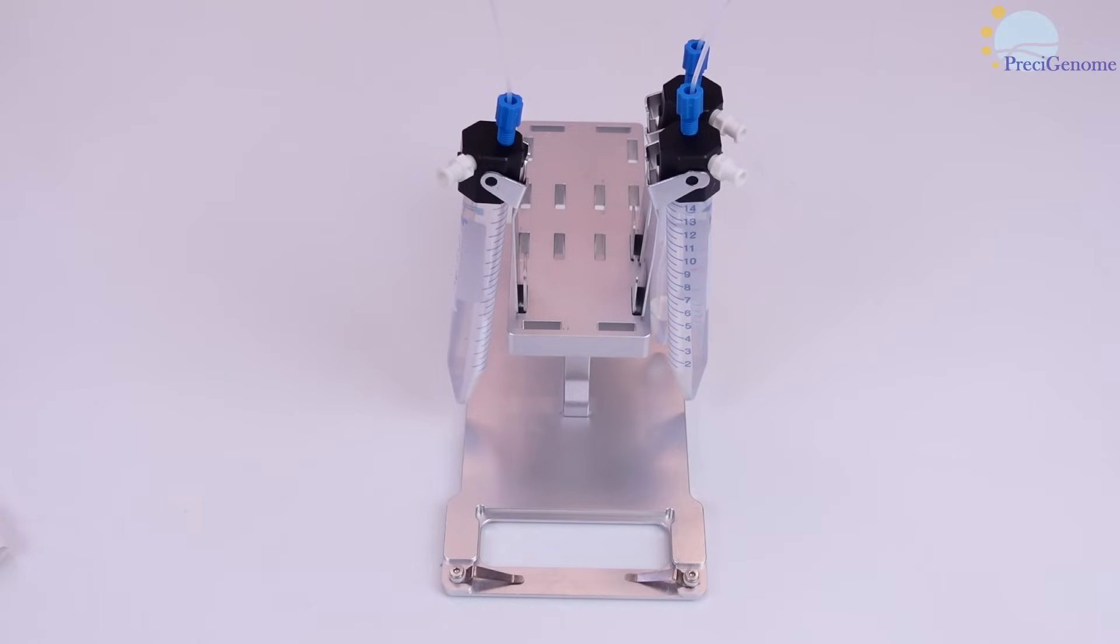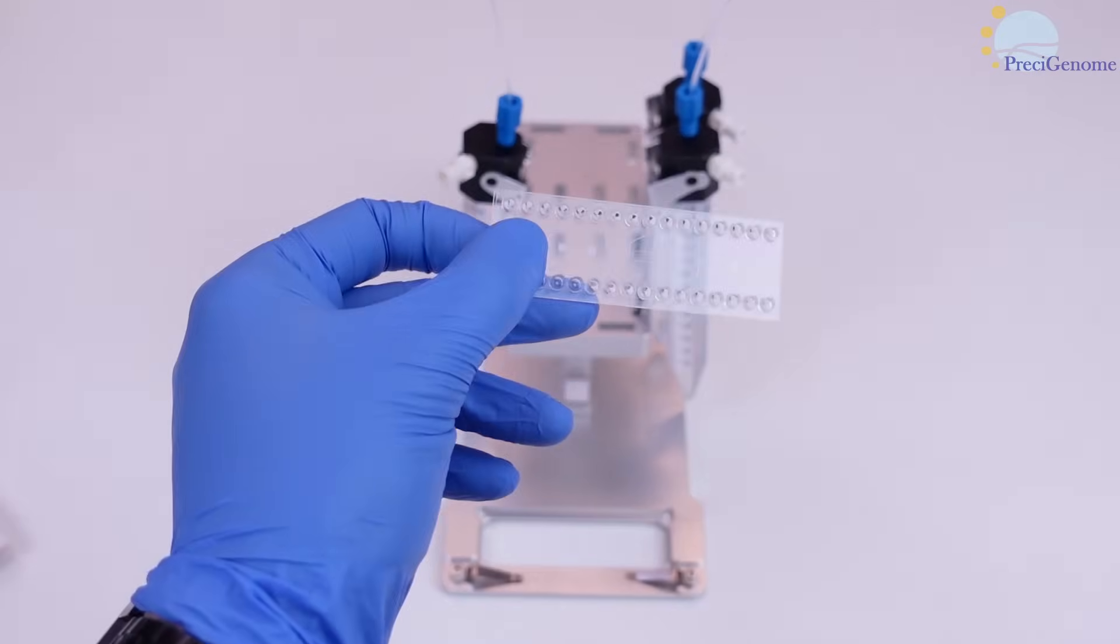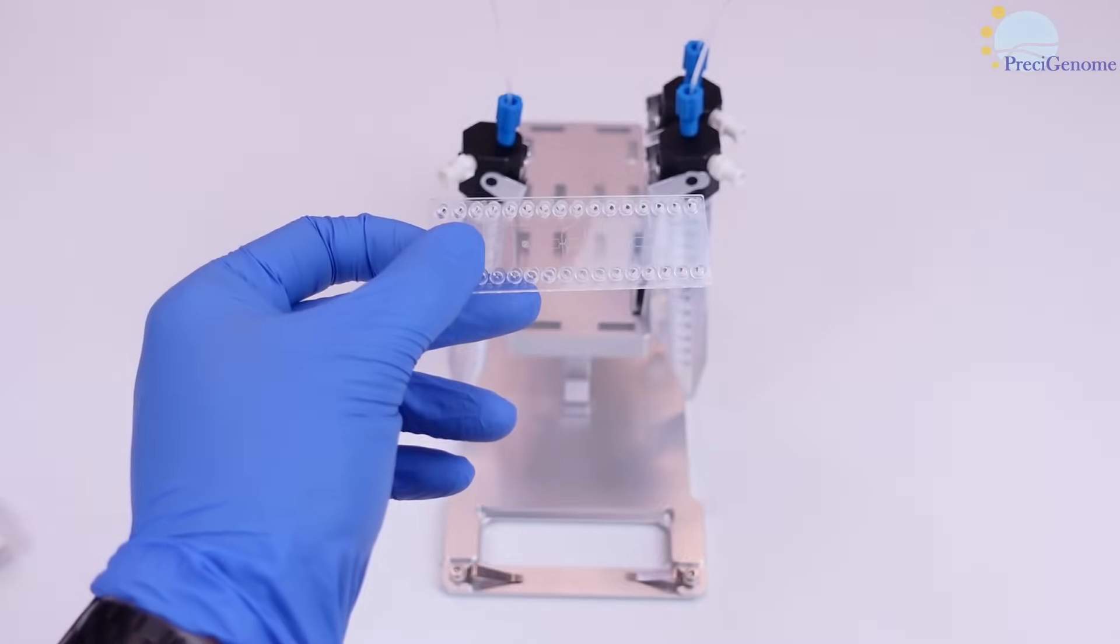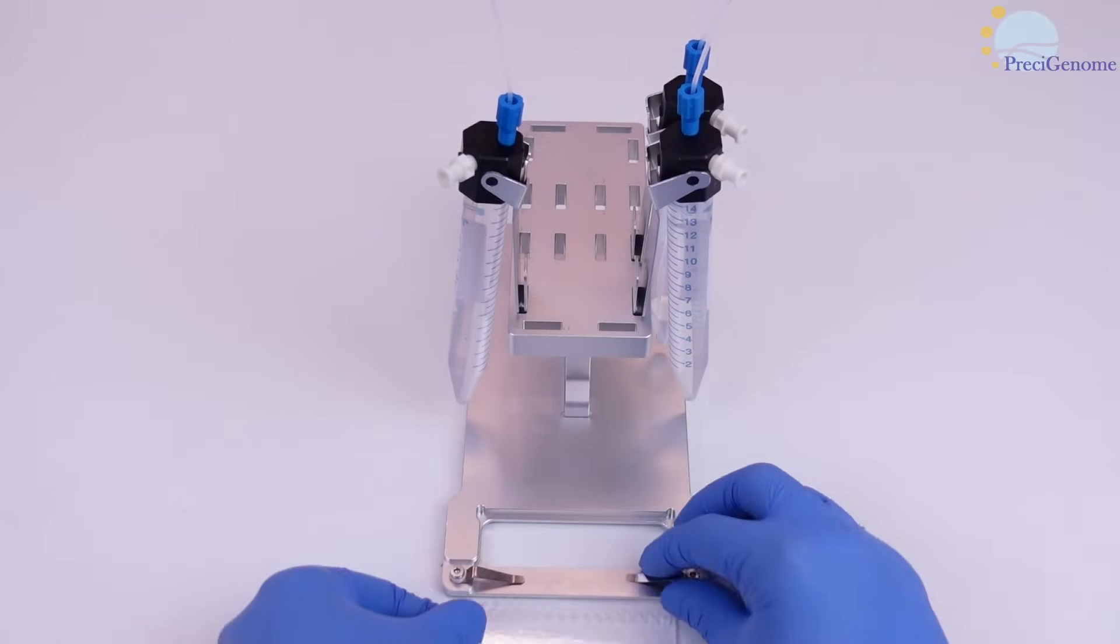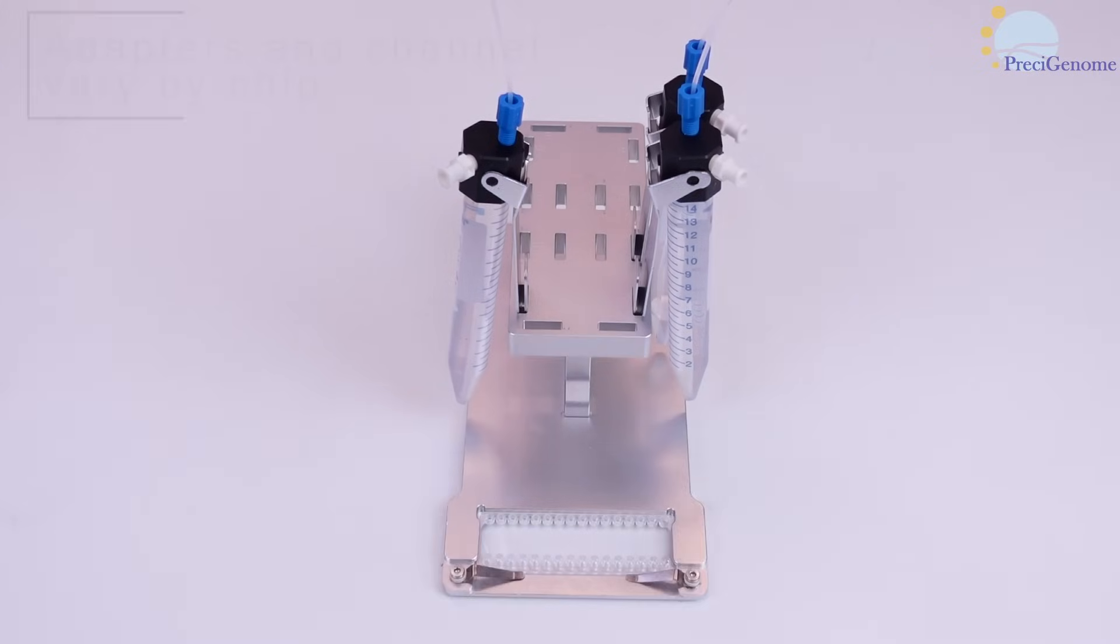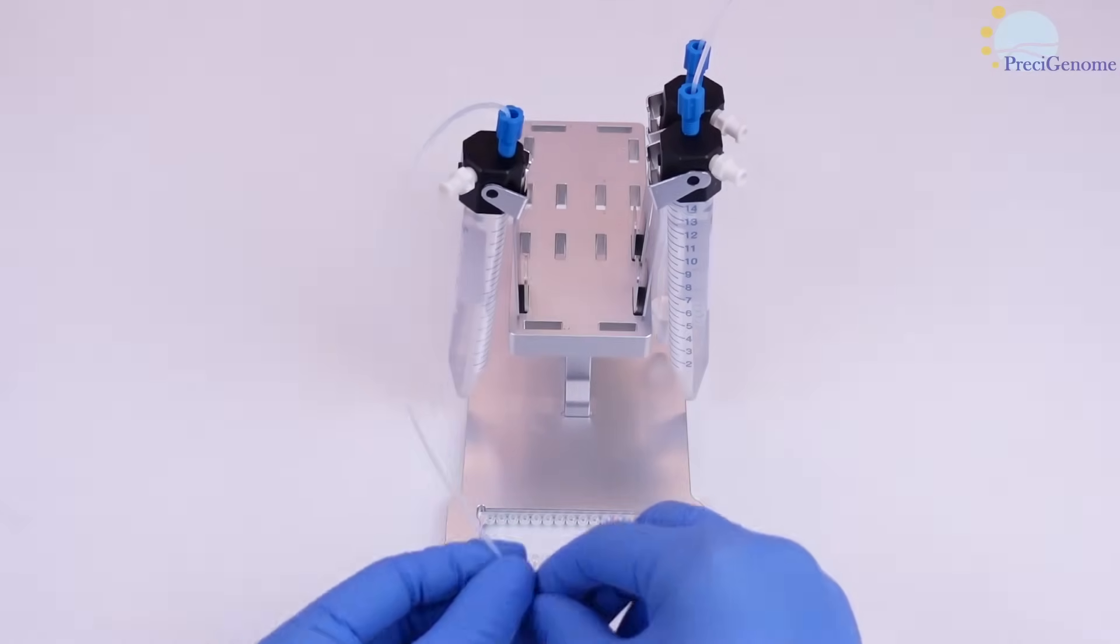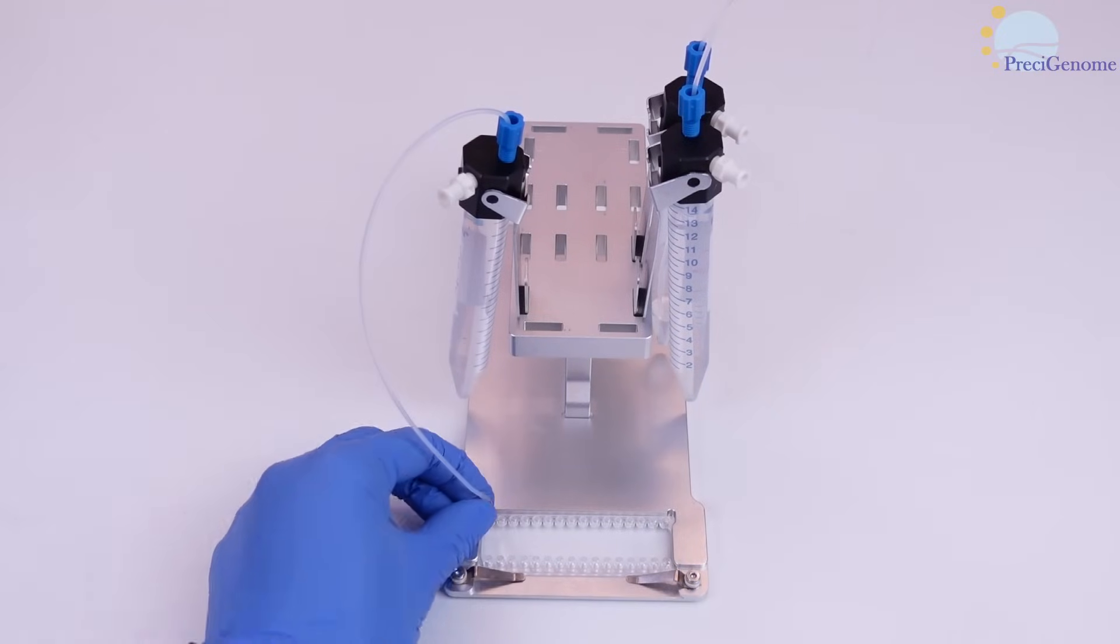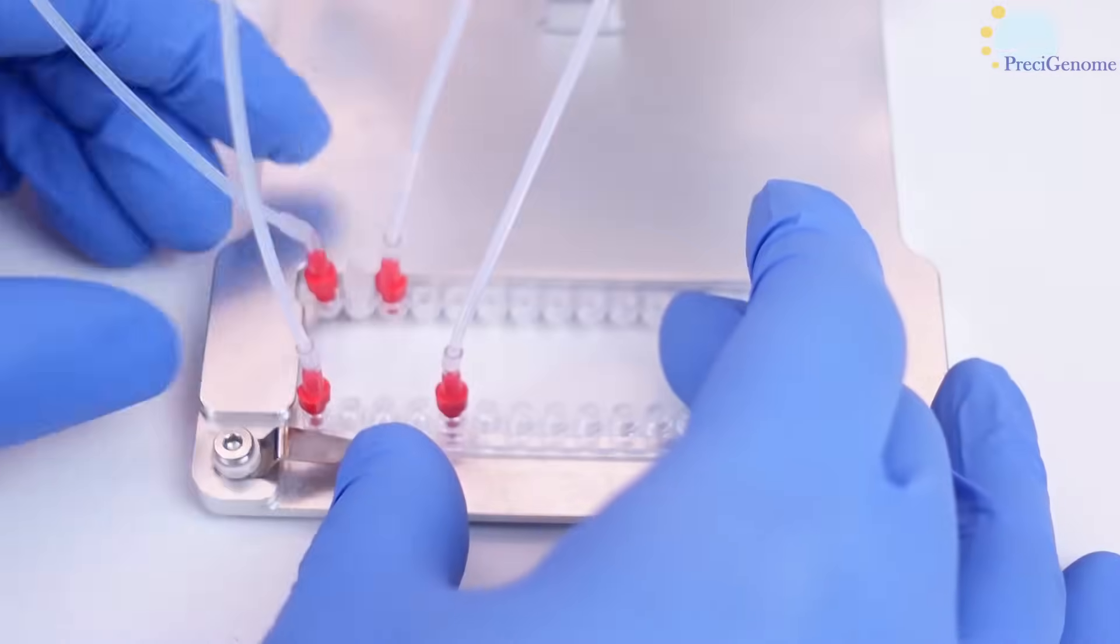Precigenome offers various droplet generation chips. This one is capable of both single and double emulsion. Depending on the design, you may need luer or mini luer adapters. Whichever chip you use, connect the PTFE tubing to the appropriate channel inlets and plug any unused outlets.